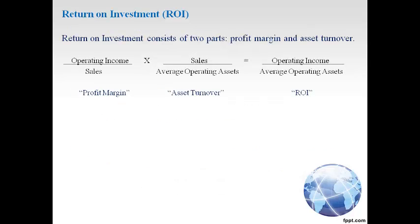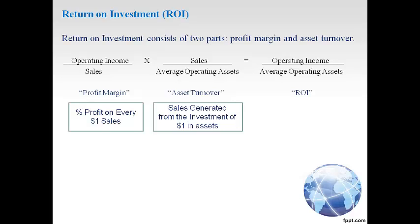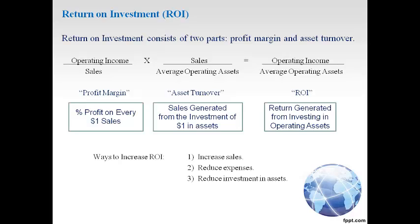The most common method for evaluating the profitability of an investment center or segment is to monitor return on investment. Return on investment is generated from two parts: profit margin and asset turnover. Profit margin is the percent profit on every one dollar in sales the company generates — the higher the better. Asset turnover is the sales generated from every dollar invested in the business. The goal is to generate profitable sales from each dollar invested, giving a high return on investment. Profit margin can be increased by increasing sales or reducing expenses, and asset turnover will be higher when a lower investment generates the same level of sales.